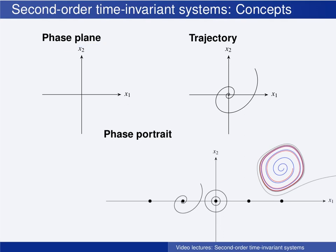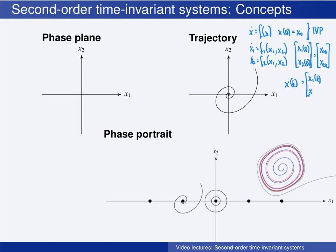Having an initial value problem, x dot equals f, and x at the initial time 0 has some value x0, which for the two-dimensional system looks like this. Then, assuming that the conditions of theorem are satisfied, the initial value problem has a unique solution, x of t equals x1 of t and x2 of t.